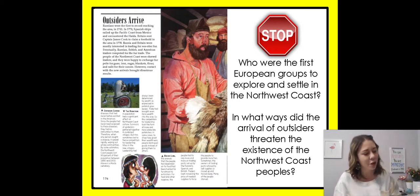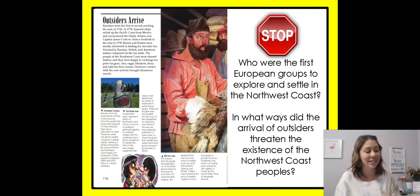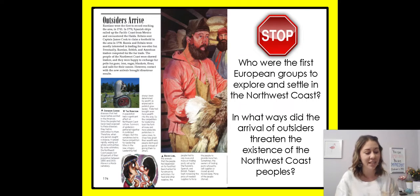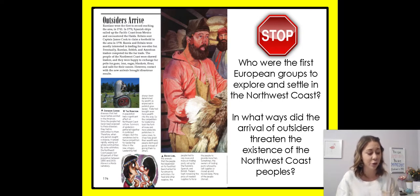Outsiders Arrive. Russians were the first to record reaching the area in 1741. In 1774, Spanish ships sailed up the Pacific coast from Mexico and encountered the Haida. Britain sent Captain James Cook to claim a foothold in the area in 1778. Russia and Britain were mostly interested in trading for sea otter fur. Eventually, Russian, British, and American traders competed for the fur trade. The people of the Northwest Coast were shrewd traders and were happy to exchange fur pelts for guns, iron, sugar, blankets, flour, and sails for their canoes. However, the contact with the new arrivals brought disastrous results.